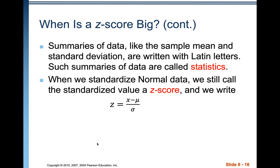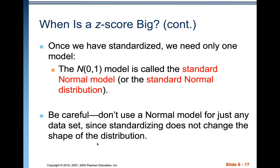When we standardize normal data, we still call the standardized score a z-value and we write z equals x minus mu over sigma. The big thing you need to know is that it's observation minus mean over standard deviation. Once we've standardized, we need only one model — the standard normal model — which is the normal model with a mean of zero and a standard deviation of one.